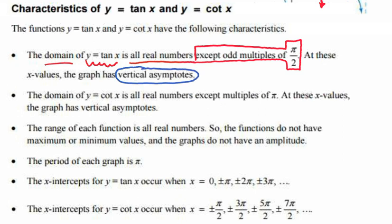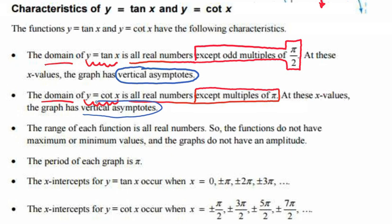The domain of y equals the cotangent of x is all real numbers except at multiples of pi. At these x values, the graph has vertical asymptotes.